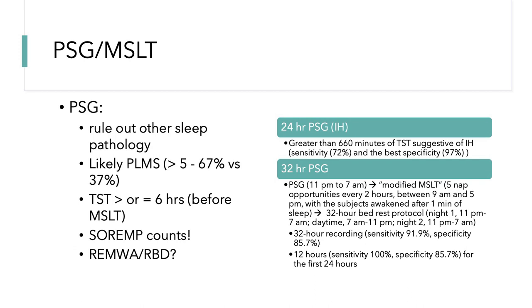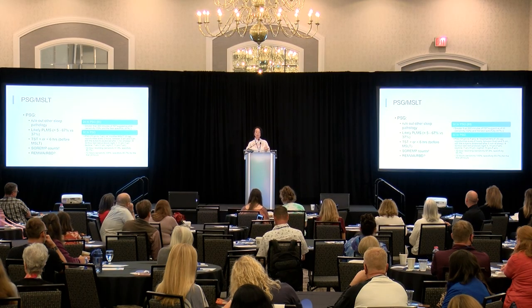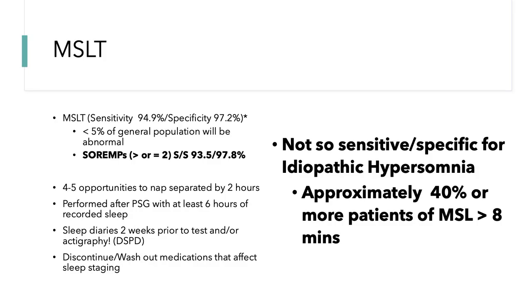Polysomnography is typically done to rule out other sleep pathology, and to ensure at least six hours of sleep before the MSLT. Extended 24-hour and 32-hour polysomnographies have been tested specifically for idiopathic hypersomnia to capture more patients and diagnose them adequately. The MSLT consists of four to five nap opportunities separated by two hours. The challenge is that in narcolepsy type 2 and idiopathic hypersomnia, sensitivities are nowhere near the ideal-population figures — in IH, approximately 40% or more of patients don't meet the less-than-eight-minute criteria.